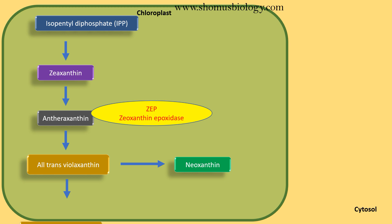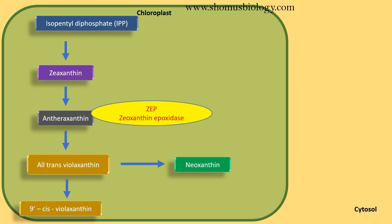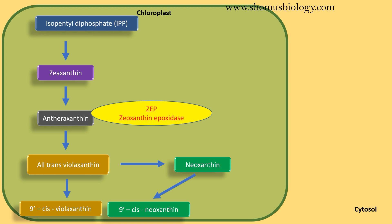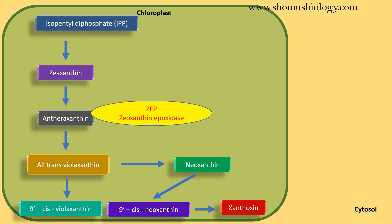The different variants of trans-violaxanthin can be converted into either neoxanthin or 9'-cis-violaxanthin. If 9'-cis-violaxanthin is produced, that is fine. If neoxanthin is produced, it will be further converted to 9'-cis-neoxanthin. Ultimately in the chloroplast, both 9'-cis-violaxanthin and 9'-cis-neoxanthin are converted to xanthoxin by the enzyme 9-cis-epoxycarotenoid dioxygenase, or NCED.